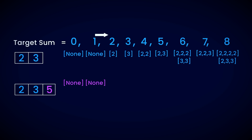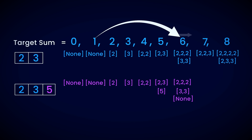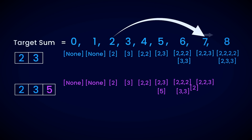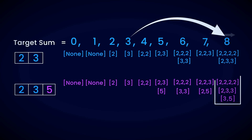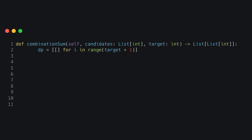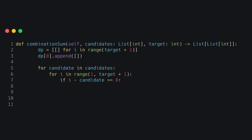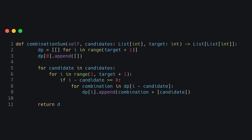Starting from the left, until the target sum equals the last number, do nothing. For the target sum equal to the last number, simply add the last number by itself as a new combination. For target sum equal to last number plus 1, add the last number to all combinations that add up to 1. For target sum equal to last number plus 2, add the last number to all combinations that add up to 2. Keep doing this until you reach the target sum. In code, you track all sums from 1 to target using an array. For target sum 0, add an empty list combination. Then iterate through numbers, and for each target sum, add combinations using all combinations for target sum minus the current number. The code link will be in the description.